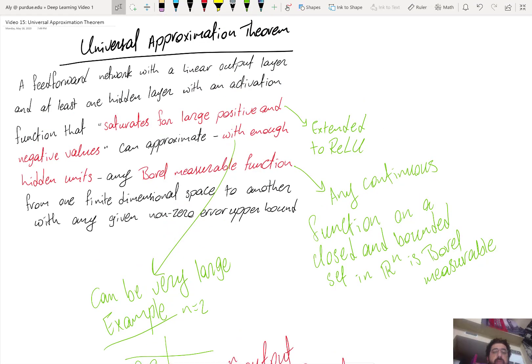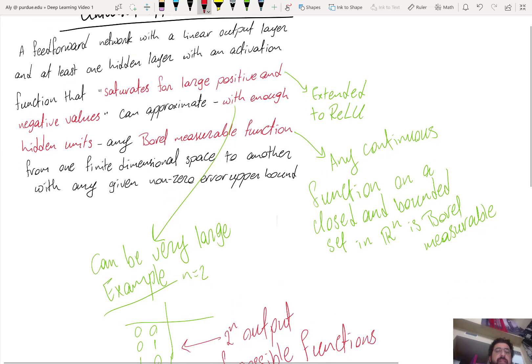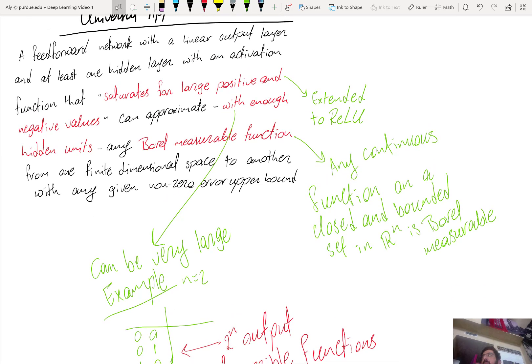Now, let's discuss the third aspect in red here with enough hidden units. Let's see why that could be a big obstacle.